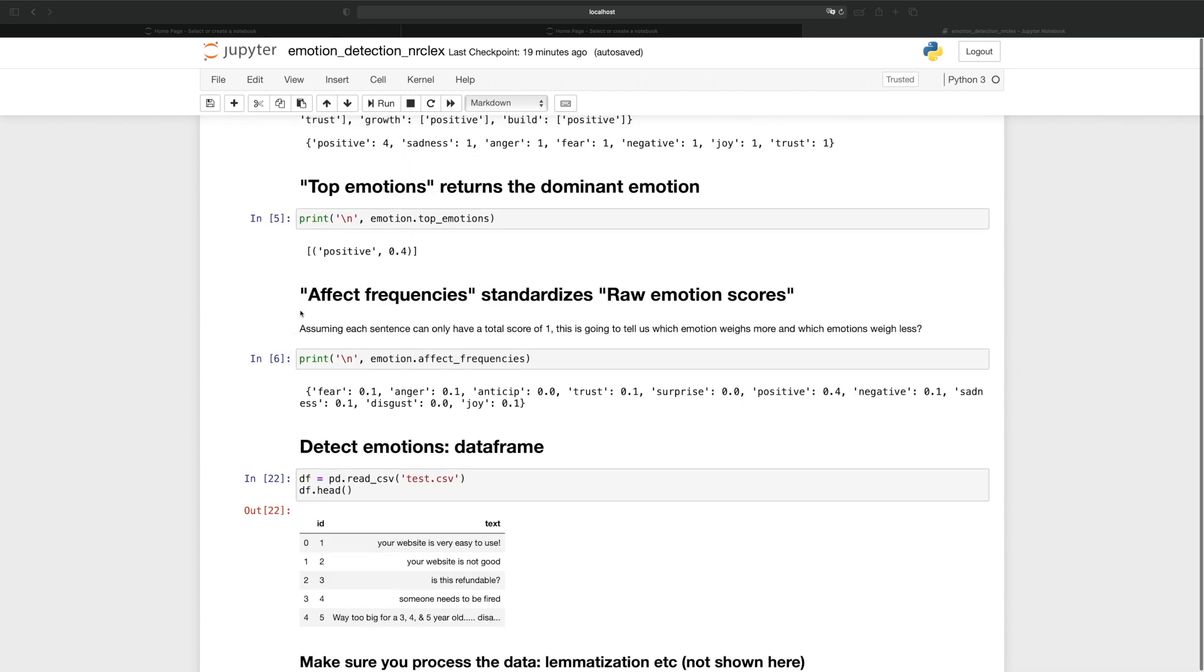And moving on, affect frequency is going to standardize the raw emotion scores. Here we see that 40% of the emotion detected was positive, and 10% was sadness. Anticipation was not detected, so it gets a score of zero.